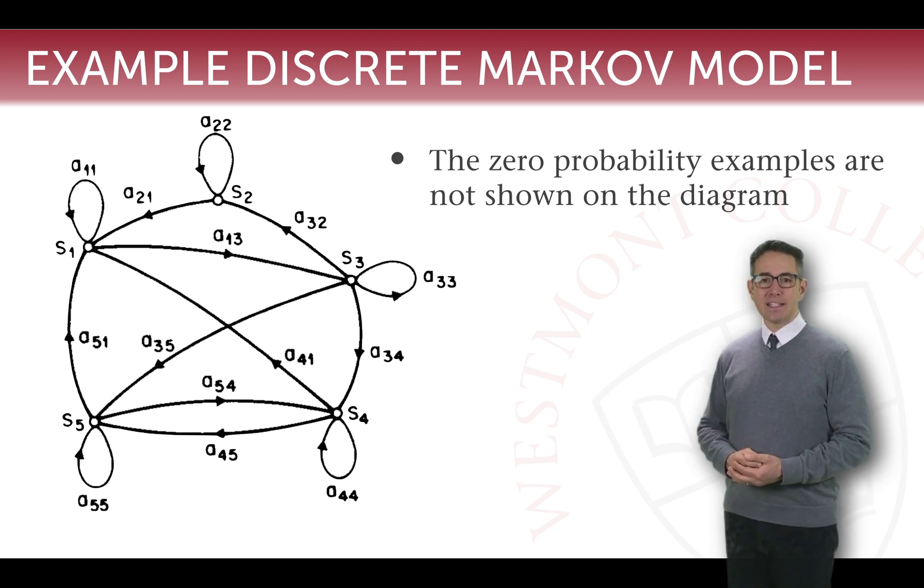So for example, take the case of S2. In S2, there are two arrows that lead out of S2. One goes to S1 and the other one loops back around and goes back to S2. And so we can say that the transition probability of moving from S2 to S2 is 50 percent. The probability of moving from S2 to S1 is 50 percent.